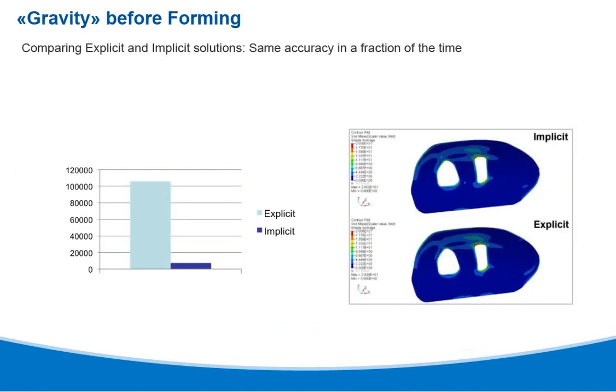Using implicit for gravity before forming provides the same accuracy in a fraction of the time.